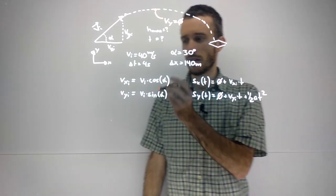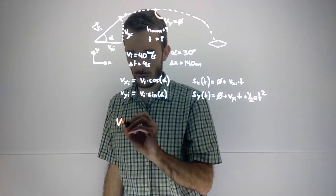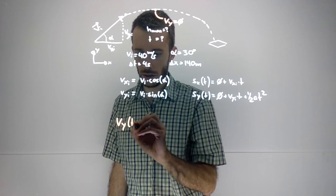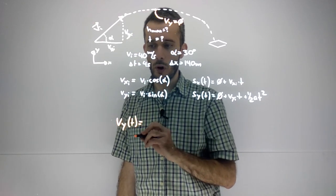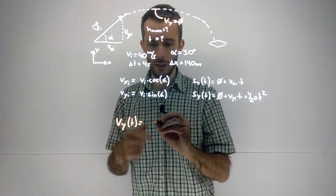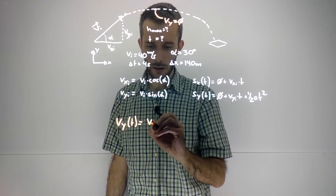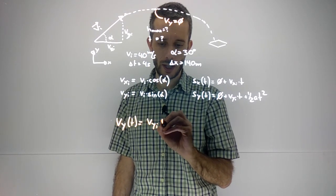So I can use this to write my velocity in y as a function of time: vy(t) = vy initial plus acceleration times time.